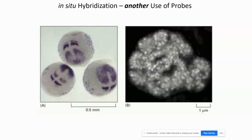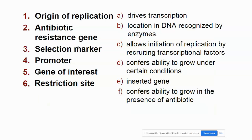Similar techniques can be used to visualize the presence of genes in living cells. What we see here on the left are zebrafish embryos using a technique called in-situ hybridization. In in-situ hybridization, the DNA probe base pairs to the gene of interest right there in the cell while the cell is still living — in-situ means in the situation of, so hybridization occurs within the living context of the cell. In this case, we're actually hybridizing to RNA, so what we're seeing is the expression of a specific gene in certain regions of the zebrafish embryo.